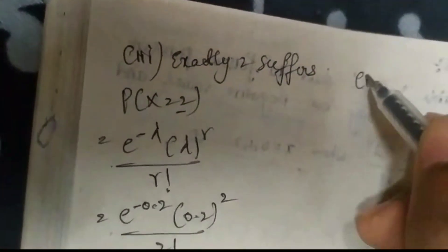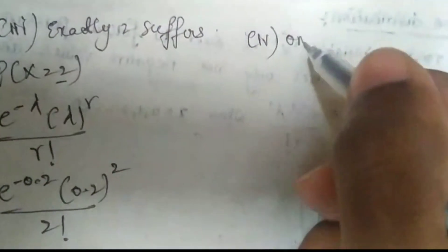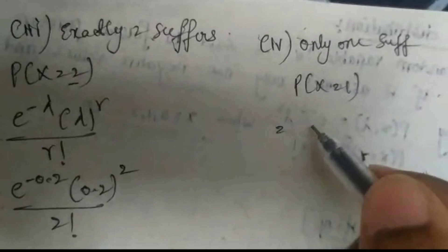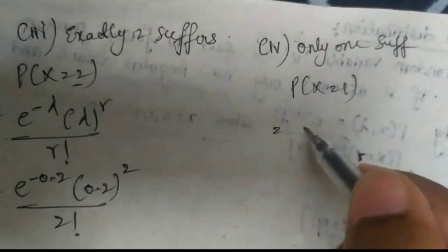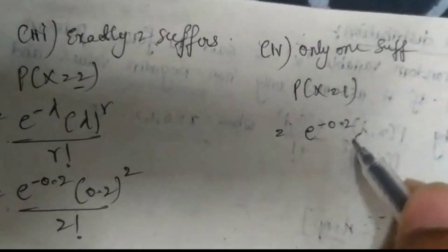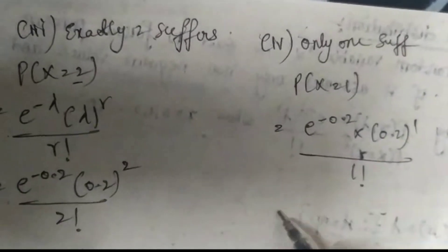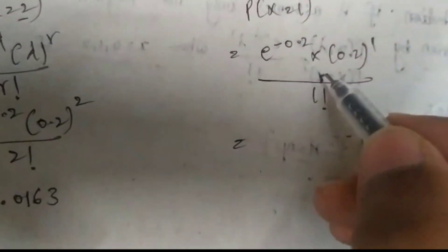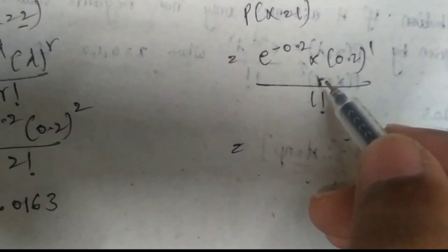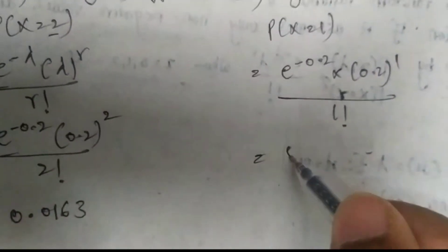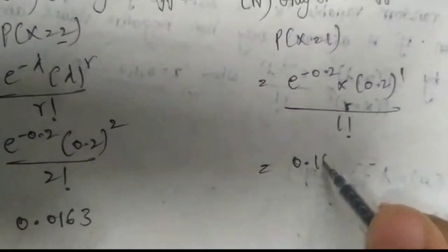The fourth part is to find the probability that only one suffers, that is P(X = 1). Substituting in the formula: e^(−0.2) × (0.2)^1 / 1!. Calculating in the Casio, we get the answer 0.1637.